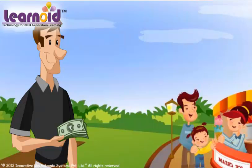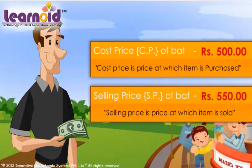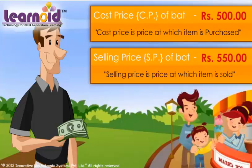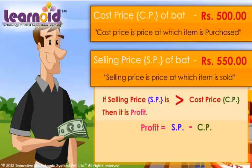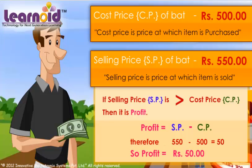Let's find whether it is profit or loss. The cost price is Rs 500 and the selling price is Rs 550. Since the selling price is greater than the cost price, it is a profit. Profit equals selling price minus cost price. Therefore, 550 minus 500 equals 50. So the profit is Rs 50.